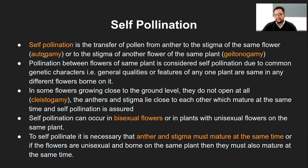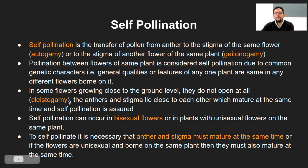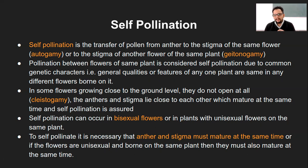Autogamy is the transfer of pollen grain from anther to stigma of the same flower. Geitonogamy is the transfer of pollen grain from one flower to another flower of the same plant. Kleistogamy is when the flower is closed and autogamy-type pollination occurs — the anthers and stigma are close to each other.